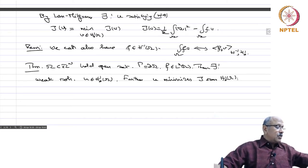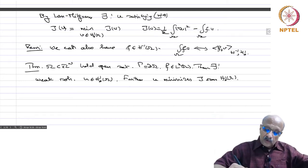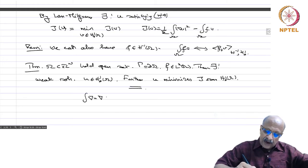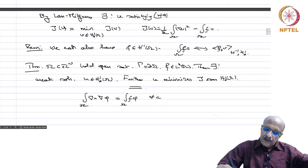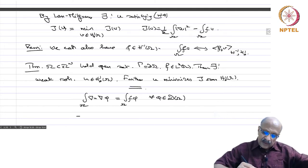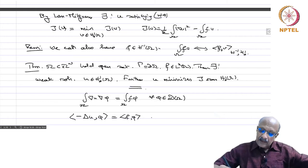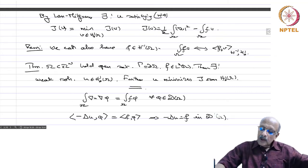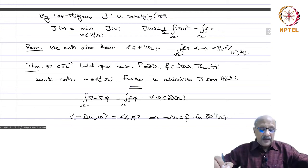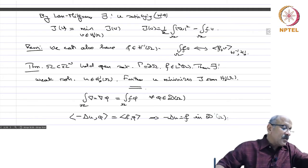Now let us see how the weak solution is connected to the original equation. Suppose we have grad u · grad phi equals f phi for every phi in D(omega). This tells us that minus Laplacian u acting on phi equals f phi as distributions, and therefore this implies that minus Laplacian u equals f in D'(omega). So the weak solution satisfies the differential equation in the sense of distributions.